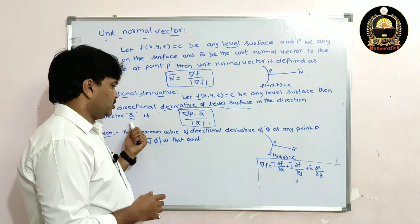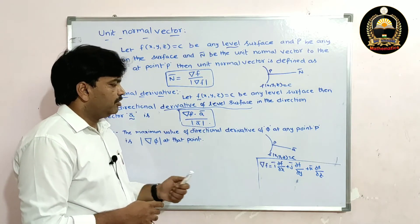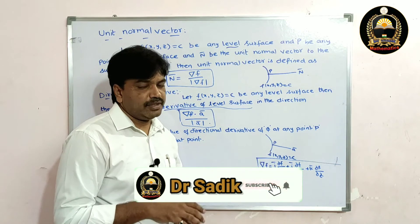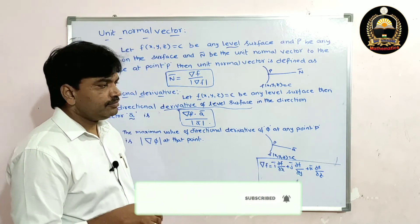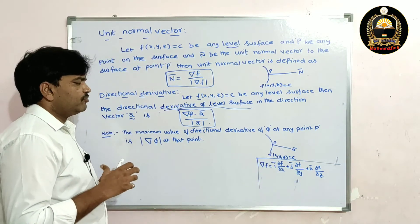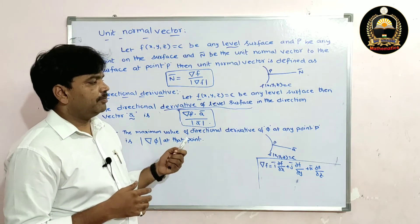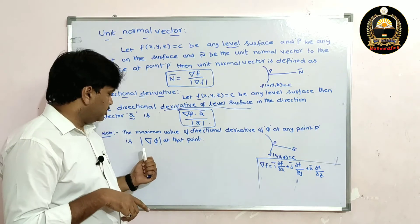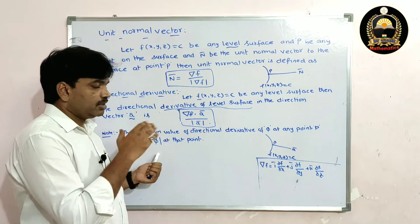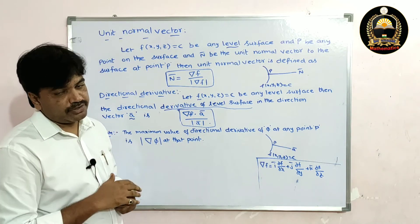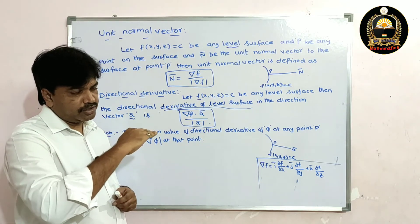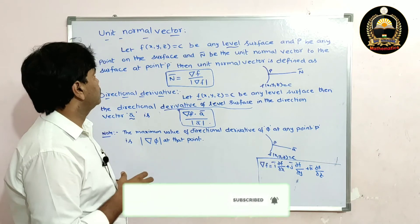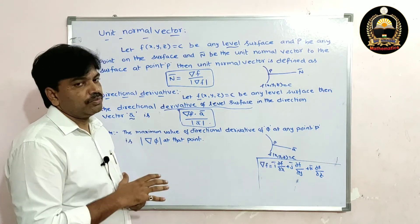Given ā, find ∇f using the formula at the point P. Note: the maximum value of the directional derivative of f at any point P is equal to |∇f|, and this maximum value is attained along the normal direction — that is, the maximum rate of change occurs along the normal direction.